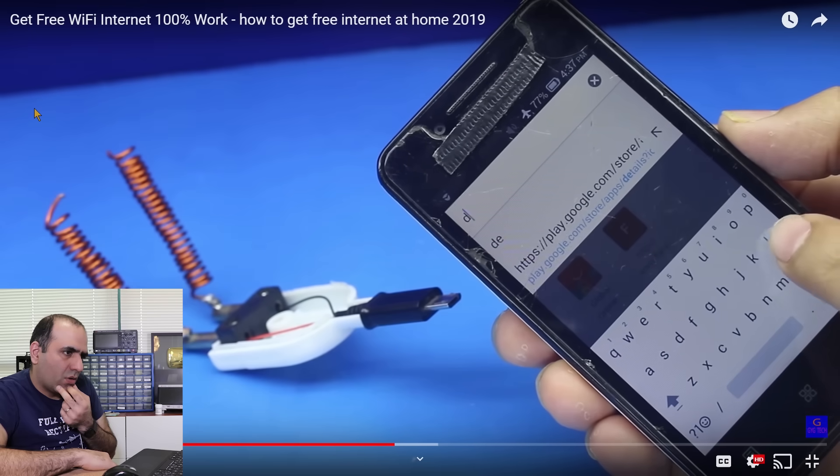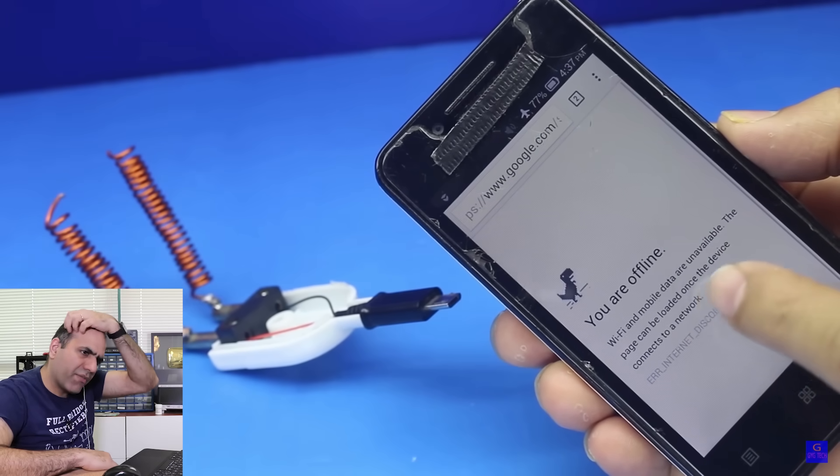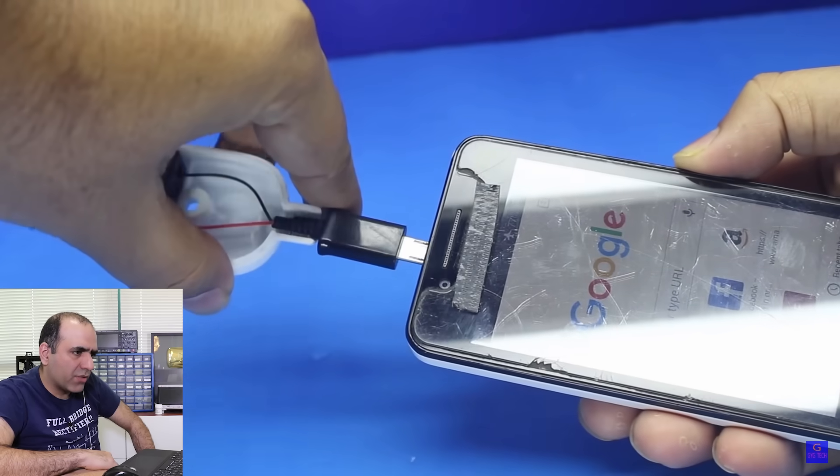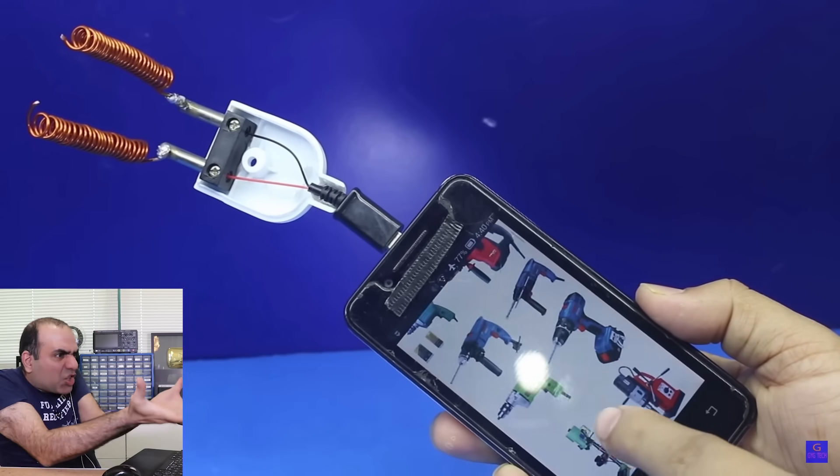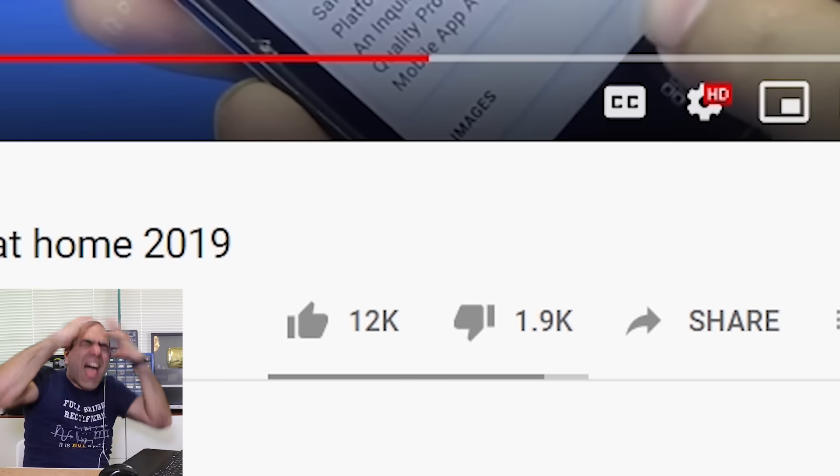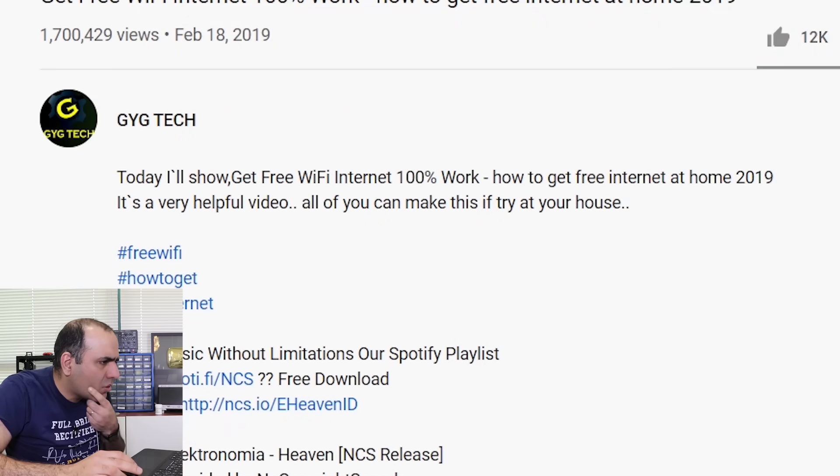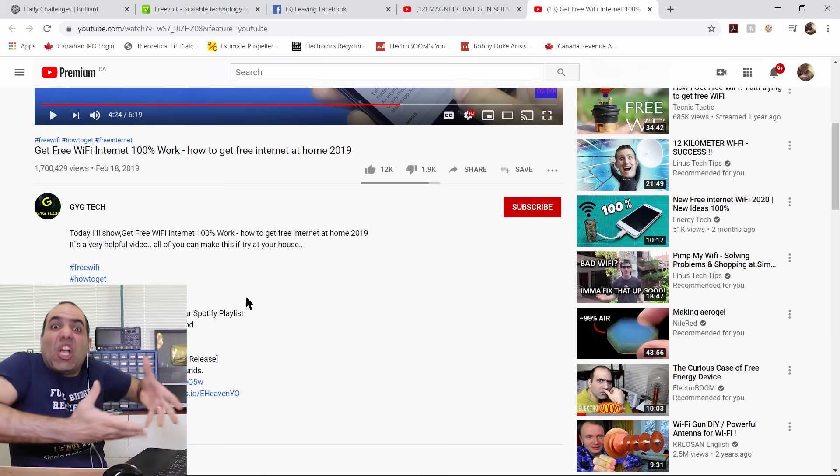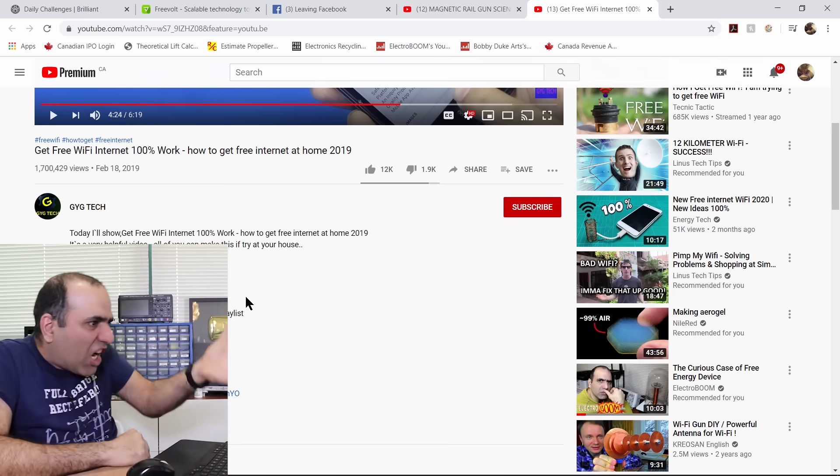There we have it. So he's showing that his phone is offline and doesn't have internet. He plugs in his contraption to his phone and he gets internet. What? Internet using a charger cable with all the power and ground. And he has 1.7 million views, 12,000 likes. 12,000 is not much actually. Let's see his description. Today I'll show get free WiFi internet work. It's a very helpful video. I see all of you can make this if try at your house. At least some of these videos have the decency to show maybe deep in the description that the video is fake. This guy is saying try this at home, waste your resources, cut your cables in half.